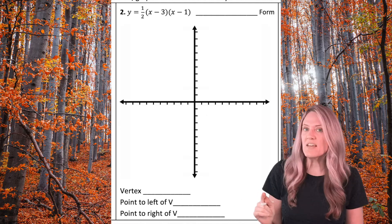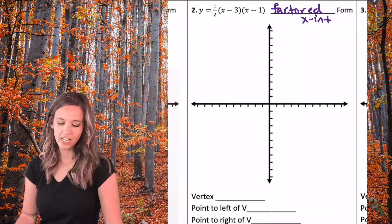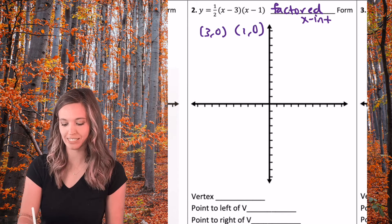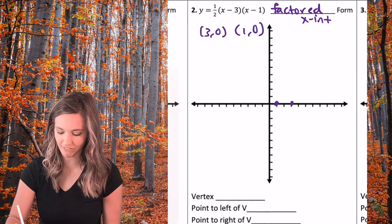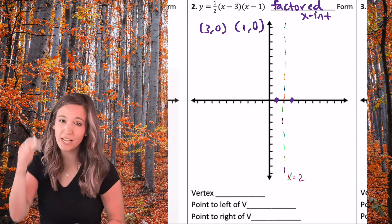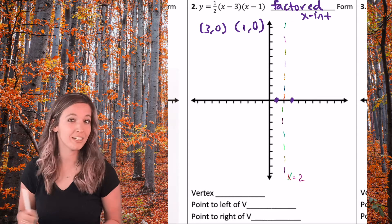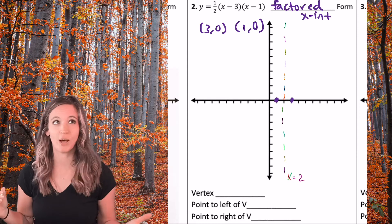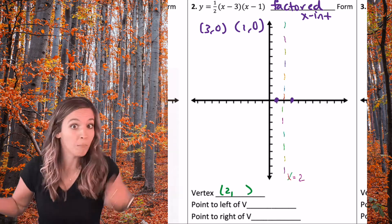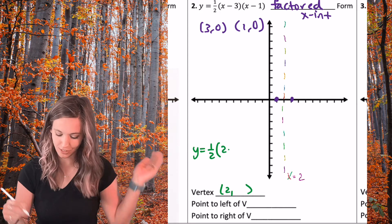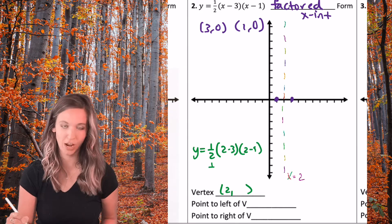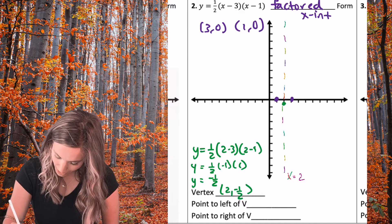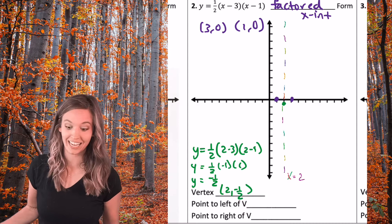Number two — remember, be efficient. You need the vertex and two points. This next one is factored form, so I know my intercepts right away: (3, 0) and (1, 0) because inside opposite. Now with those intercepts plotted, the axis of symmetry is right in the middle: x equals 2. Numerically: x-intercept plus x-intercept divided by 2 — 3 plus 1 divided by 2 equals x equals 2. That's the x-coordinate of my vertex. To find the y-coordinate, plug it in: y equals one half times (2 minus 3)(2 minus 1). That gives one half times negative 1 times 1, which is negative one half. So I have three points and can graph the quadratic.